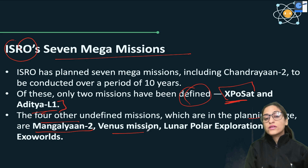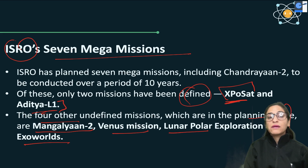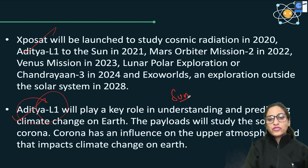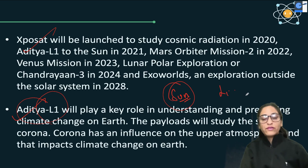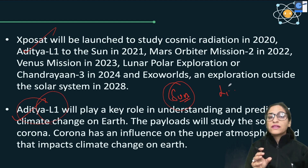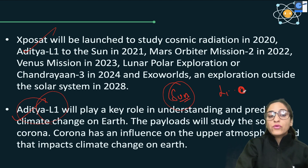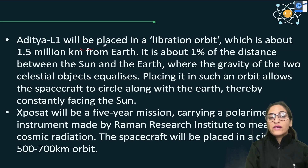The remaining undefined missions in the planning stage include Mangalyaan-2, Venus Mission, Lunar Polar Exploration, and ExoWorlds — so you should know all 7 mega missions. Regarding Aditya-L1, our mission to the sun: there are Lagrange points L1 through L5, stable or unstable, where two heavenly bodies balance their gravitational pull, and if we launch something there it will stay put. XPoSat is also on a 5-year mission, so you need to study this in static.